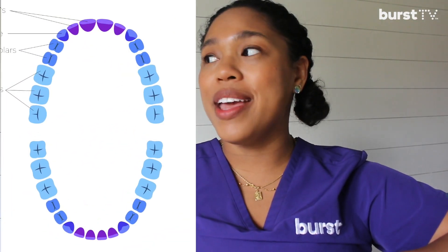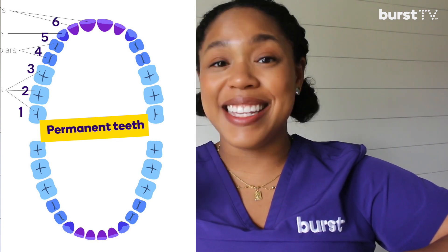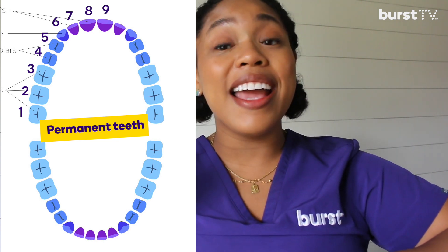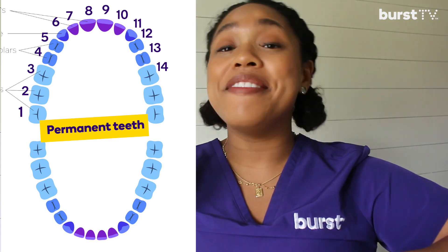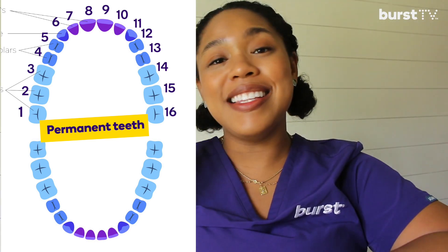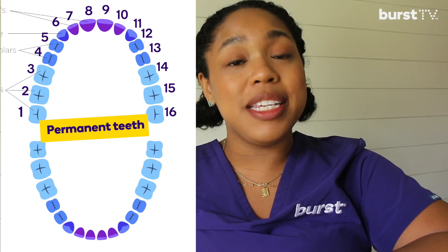Now for adult teeth — the permanent teeth. A full set of permanent teeth typically amounts to 32 teeth in total. Just like with primary teeth, we start with the very last tooth on your upper right, which is typically your third molar or wisdom tooth. We count: 1, 2, 3, 4, 5, 6, 7, 8, 9, 10, 11, 12, 13, 14, 15, 16 — and 16 is the last molar on your upper left, completing the top teeth.